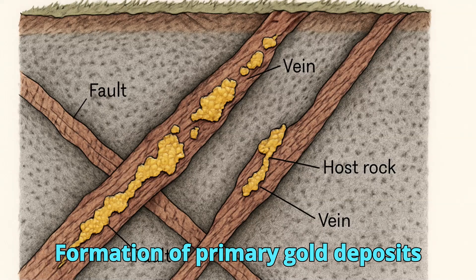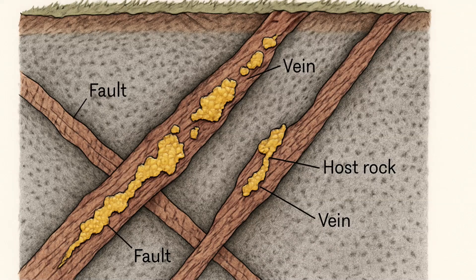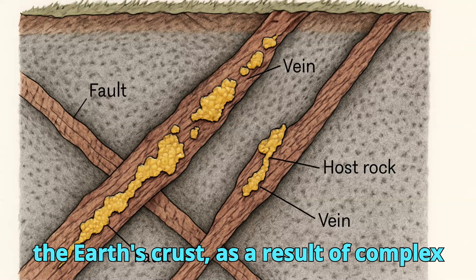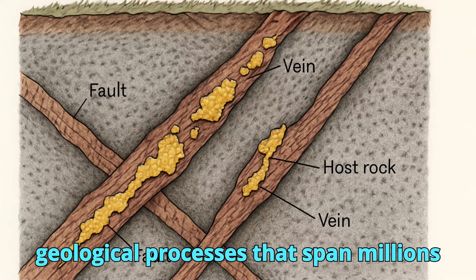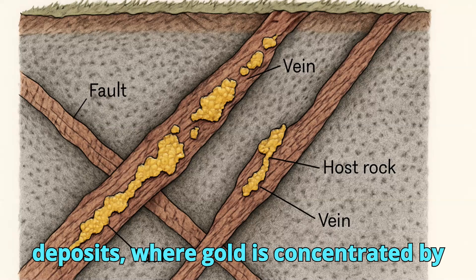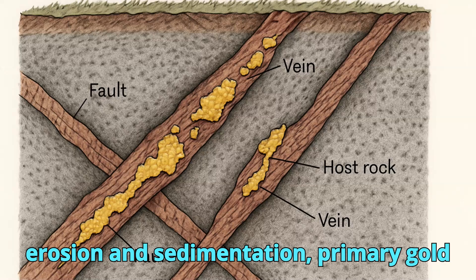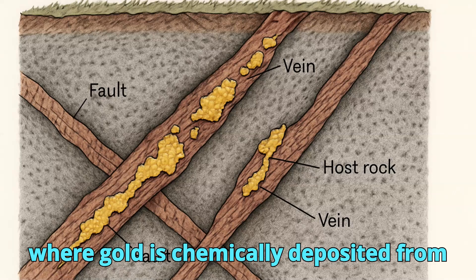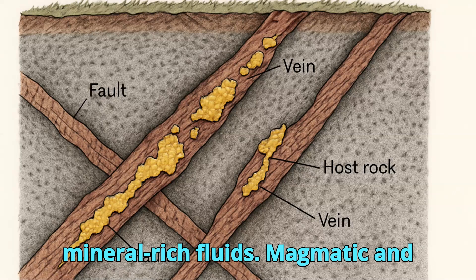Formation of primary gold deposits. Primary gold deposits form deep within the Earth's crust as a result of complex geological processes that span millions of years. Unlike secondary gold deposits, where gold is concentrated by erosion and sedimentation, primary gold deposits represent the original sources where gold is chemically deposited from mineral-rich fluids.